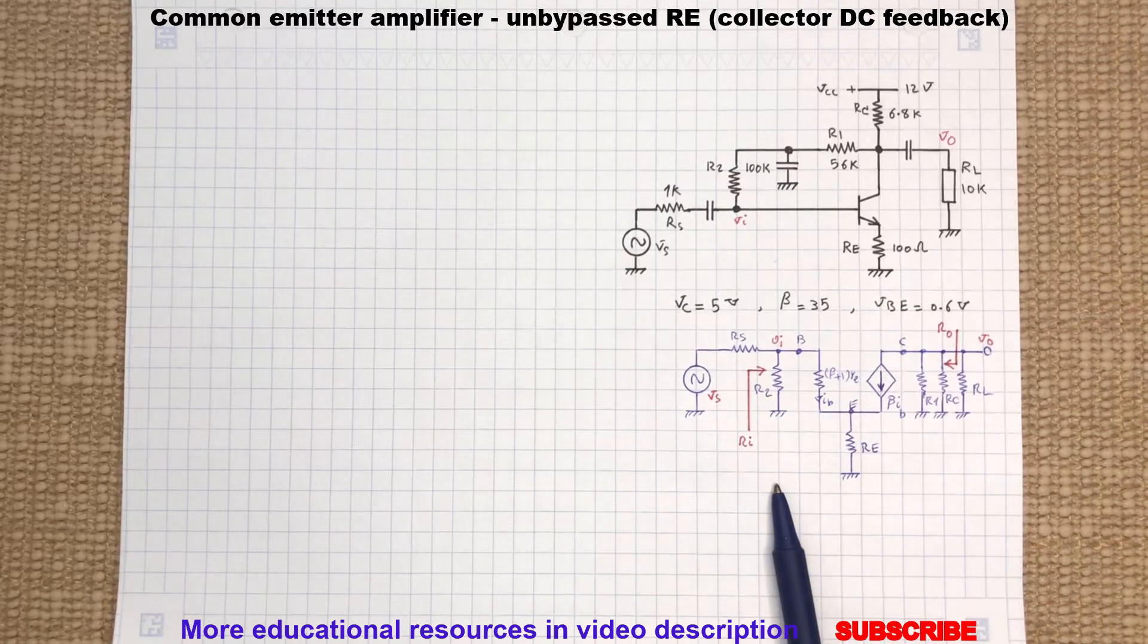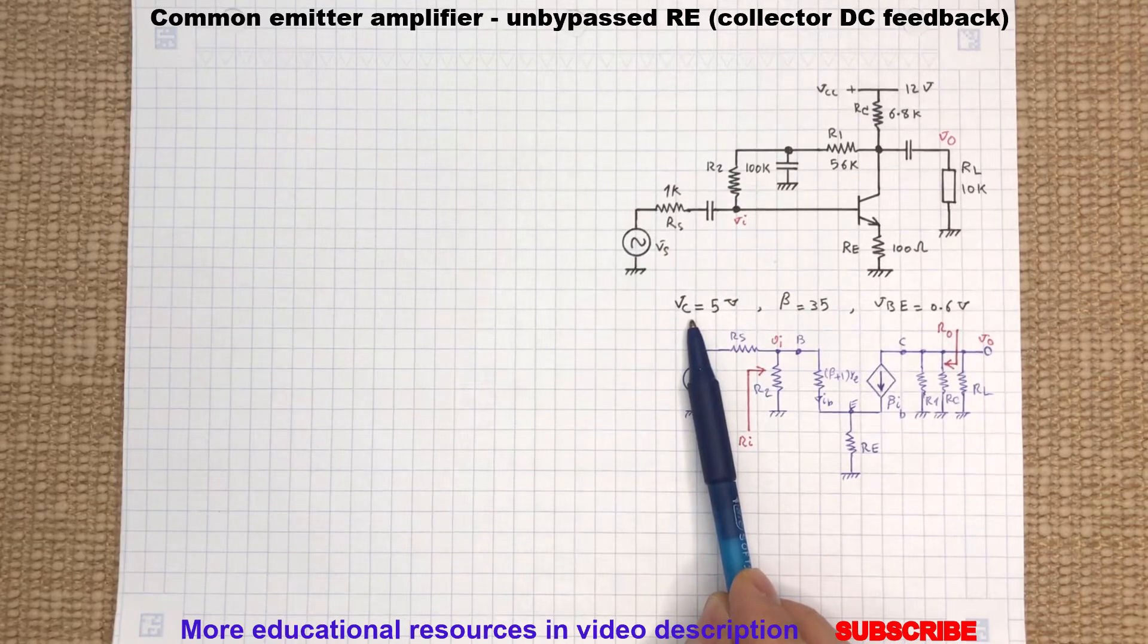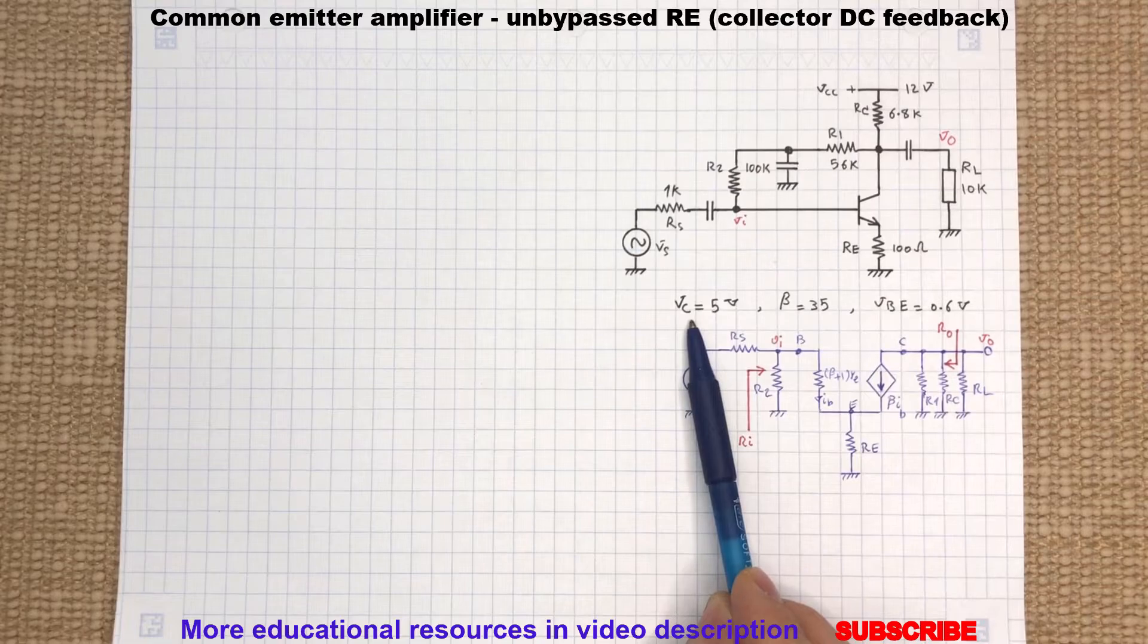To begin, let's calculate the transistor emitter current because we will need this value to determine the emitter's dynamic resistance. For this circuit, the collector DC voltage is given which is 5 volts, so we can simply determine the current flowing through the resistor RC by Ohm's law. Therefore we can write...